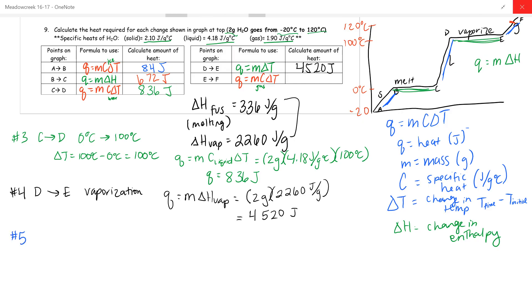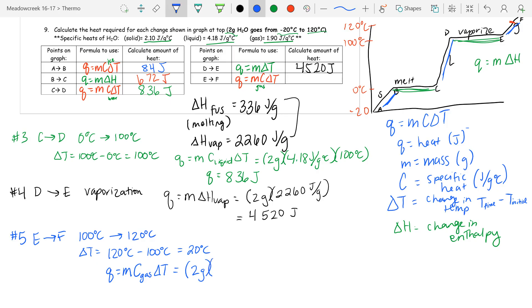And last but certainly not least, we have segment number 5 where we are going from point E to point F, in which case this is going from 100 degrees Celsius to 120 degrees Celsius. And so therefore, my delta T will be equal to 120 degrees minus 100 degrees Celsius, which gives me 20 degrees Celsius. So Q equals mc of gas times delta T. My mass is 2 grams. My C of gas is 1.90 joules per gram's degree Celsius. And my change in temperature is 20 degrees Celsius. So when I multiply all these things together, 2 times 1.90 times 20, I get 76 joules.